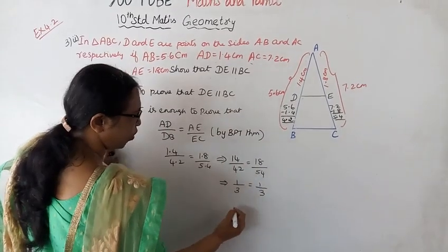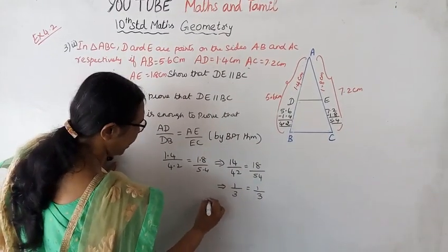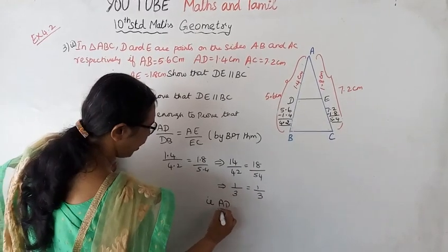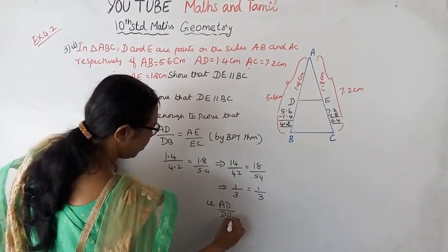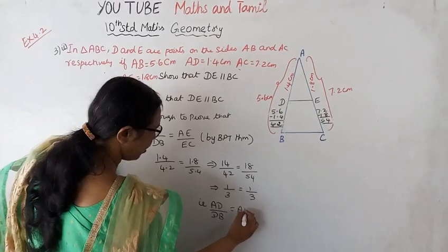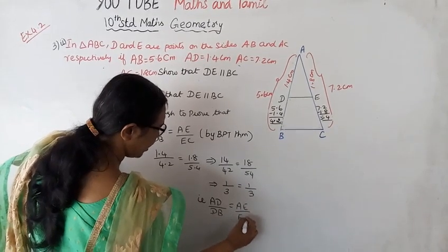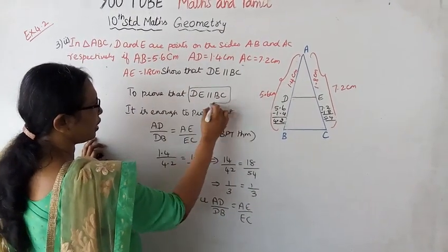18 divided by 3 gives 54, so we get 1 by 3. One by three equals one by three. That is, AD by DB equals AE by EC. Therefore, DE is parallel to BC.